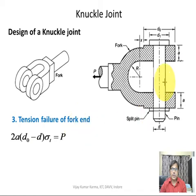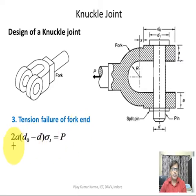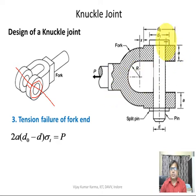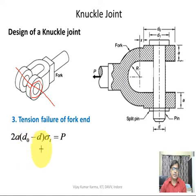Tension failure of the fork end: the fork end may also fail in tension. The area resisting this is (D0 − D) × A per side. Since there are two fork arms, the total resisting force is 2A·(D0 − D)·σ_t, which equals the applied load P. From this relation we determine A, given that D0 and D are known.